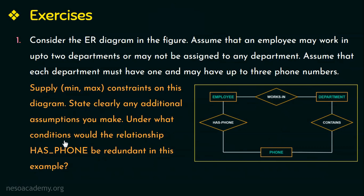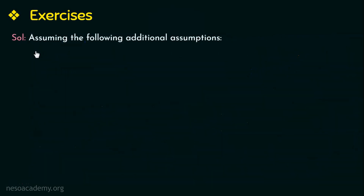Under what conditions would the relationship has-phone be redundant in this example? Let us see the solution to this problem. First we will see the additional assumptions, which I will be explaining later with the help of an ER diagram.